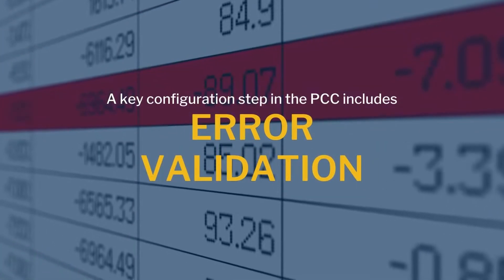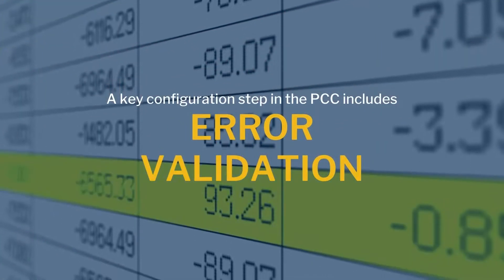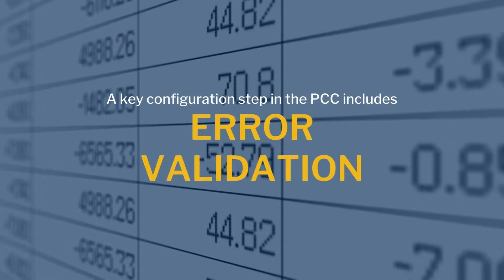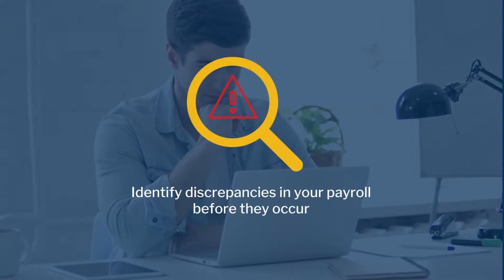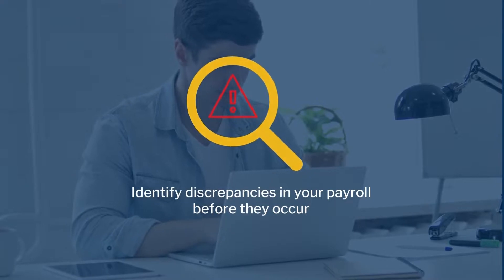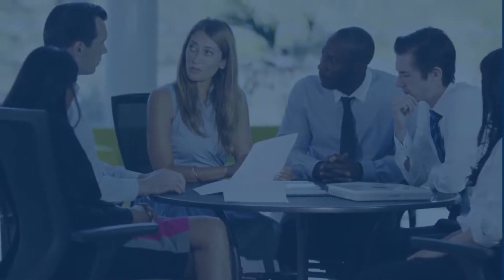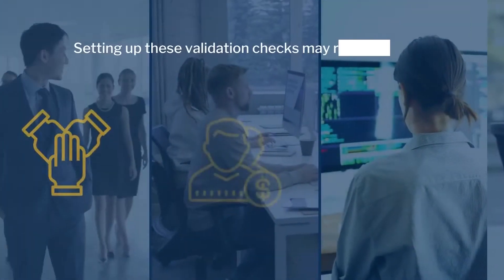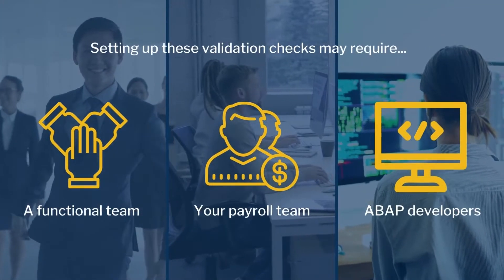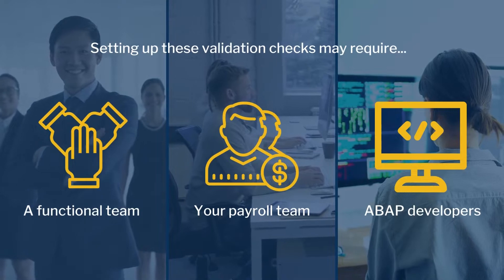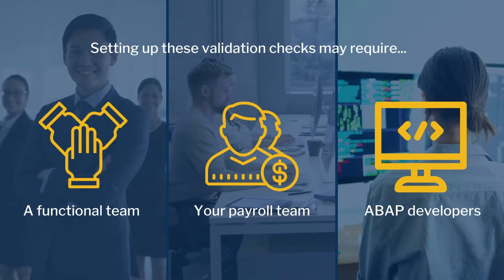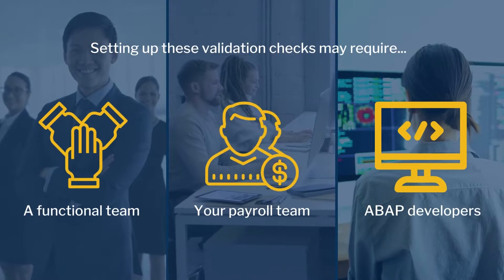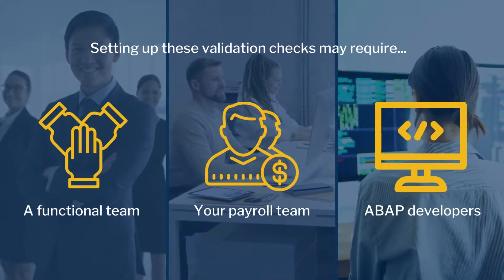One of the key configuration steps in the Payroll Control Centre is the creation of error validation steps which identify discrepancies in your payroll before they occur. Getting this in order may require setting up a small yet complex project which requires multiple resources from your organisation, including a functional team, your payroll team, and ABAP developers who will build and test these custom validation rules.